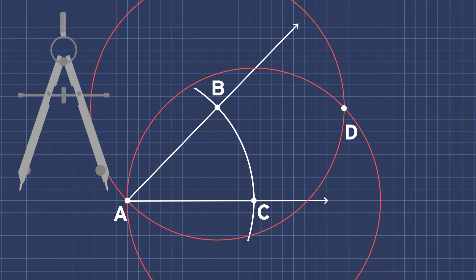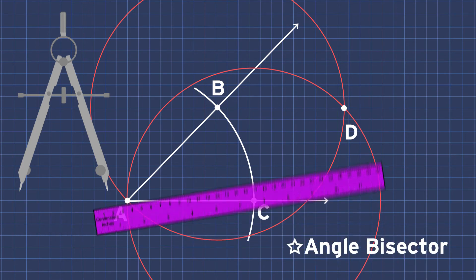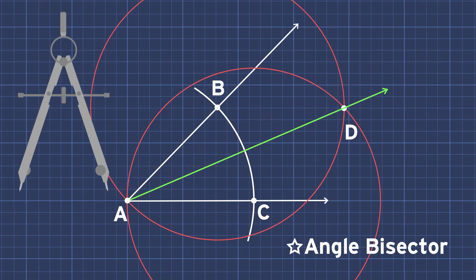And more than that, look, the arcs from B and C also intersected point A. A bisector. That's right. Now draw your line with the ruler through points A and D. Bang! Bisected.